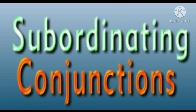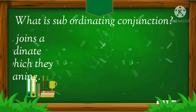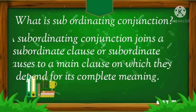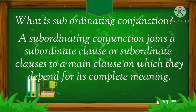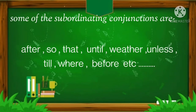A subordinating conjunction joins a subordinate clause or subordinate clauses to a main clause on which they depend for its complete meaning. Some of the subordinating conjunctions are: after, so that, until, whether, unless, till, where, before, and others.